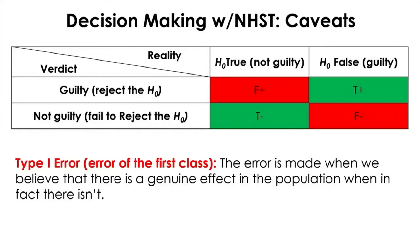Between these two types of error, statistical hypothesis testing research is heavily weighted against the Type 1 error, meaning researchers are more concerned about claiming they found something significant when in fact they didn't. That concern is echoed in the nominal alpha .05, which is an explicit decision rule to reject the null only when the likelihood of observing the data is less than or equal to 1 out of 20, rather than 50-50.